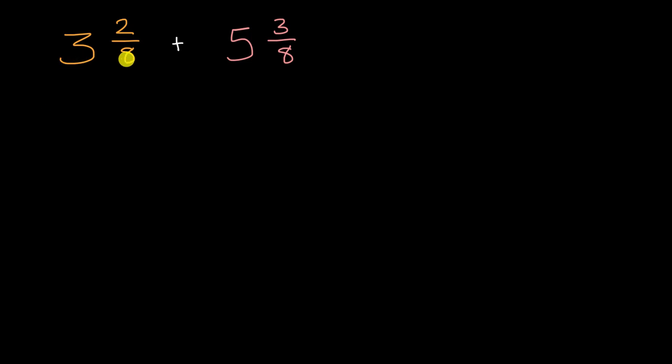You might recognize that three and two-eighths is the same thing as three plus two-eighths, and five and three-eighths is the same thing as five plus three-eighths. And so if we add these two things together, we're just adding really these four things together.